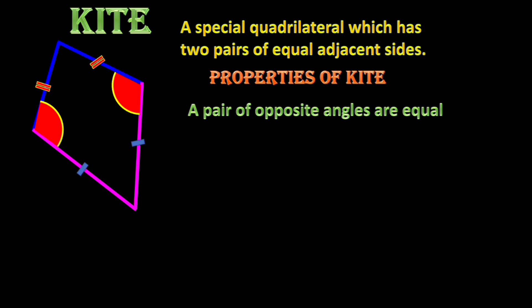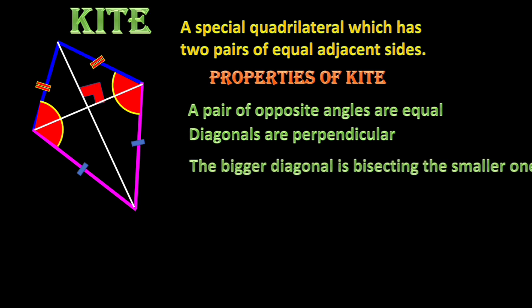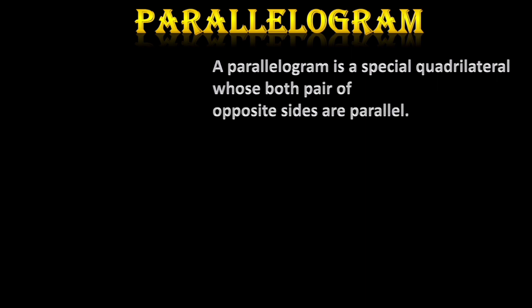The angles formed by the non-equal sides are equal in measure. Now, what about the diagonals? The diagonals are perpendicular to each other. The diagonals are not equal — one of them is bigger and one is smaller, and the bigger one bisects the smaller one.